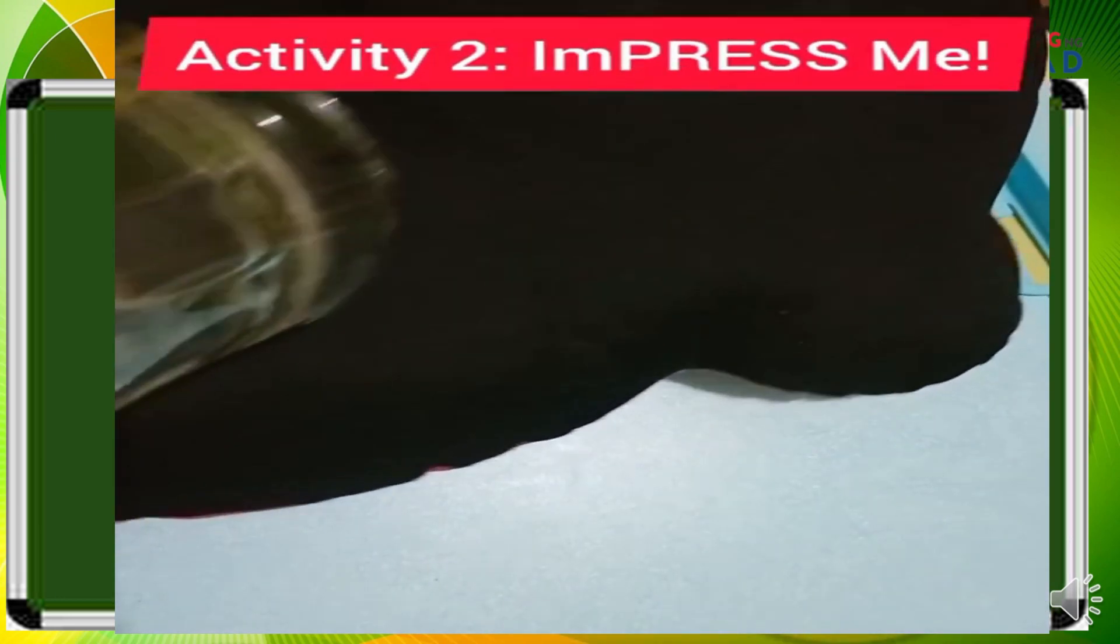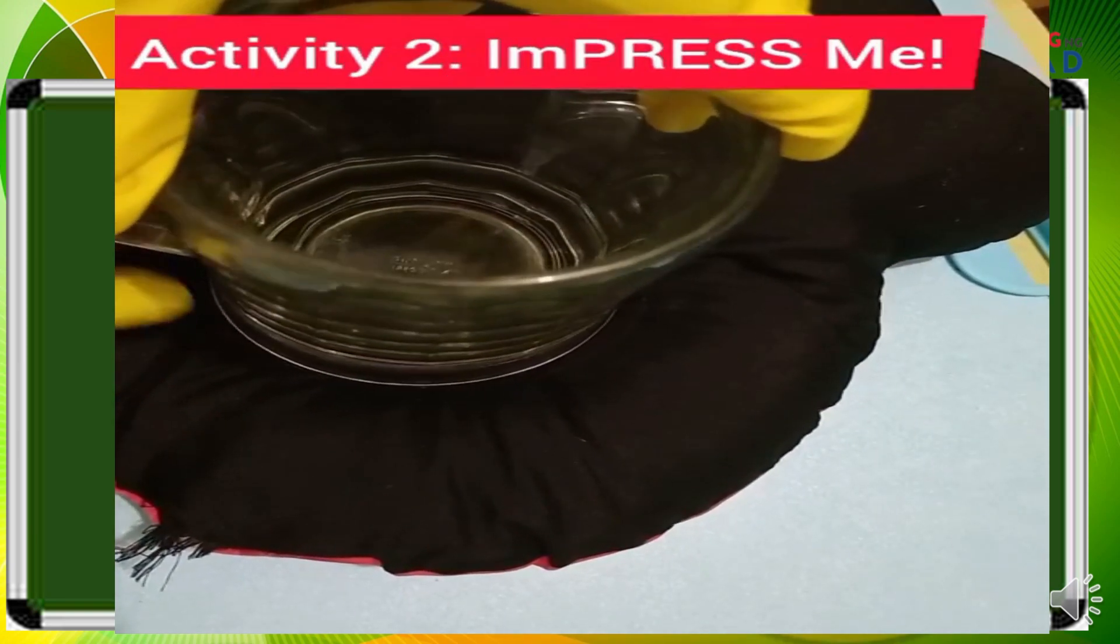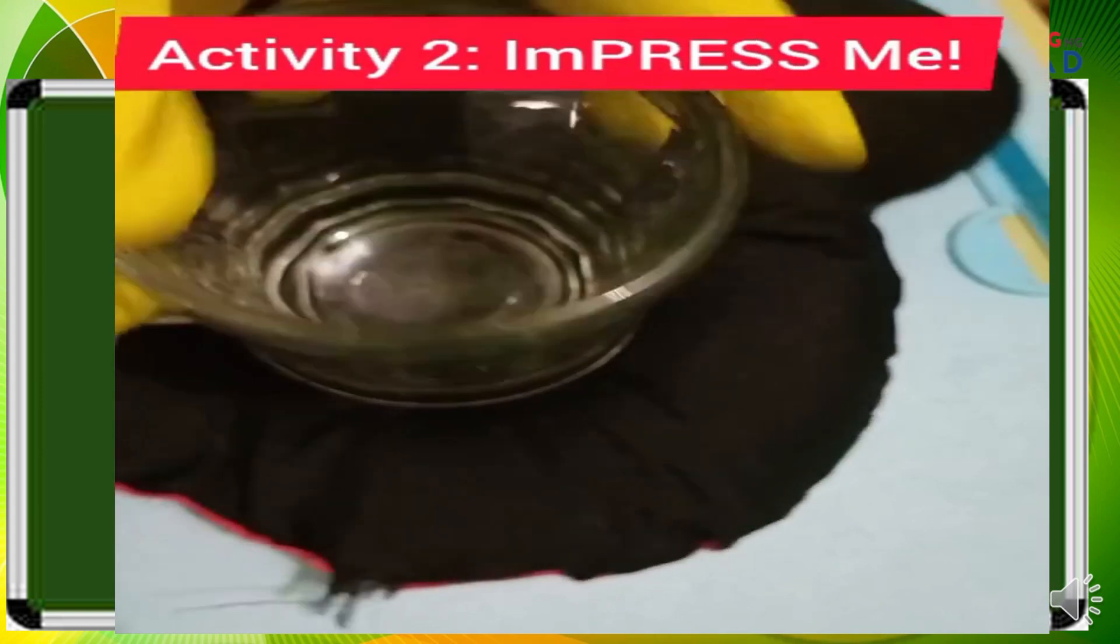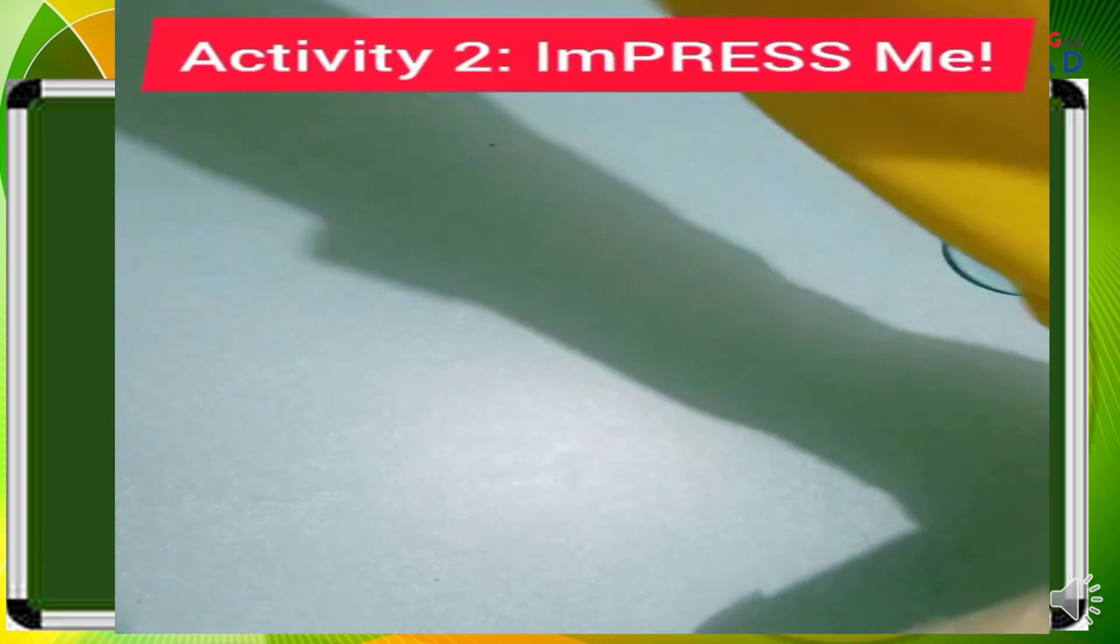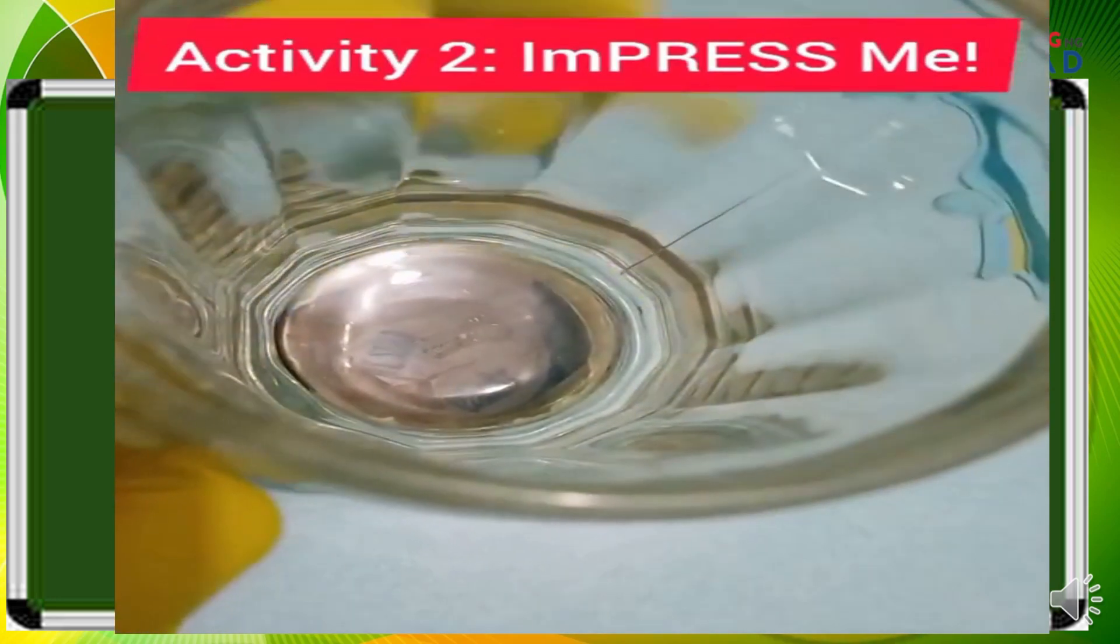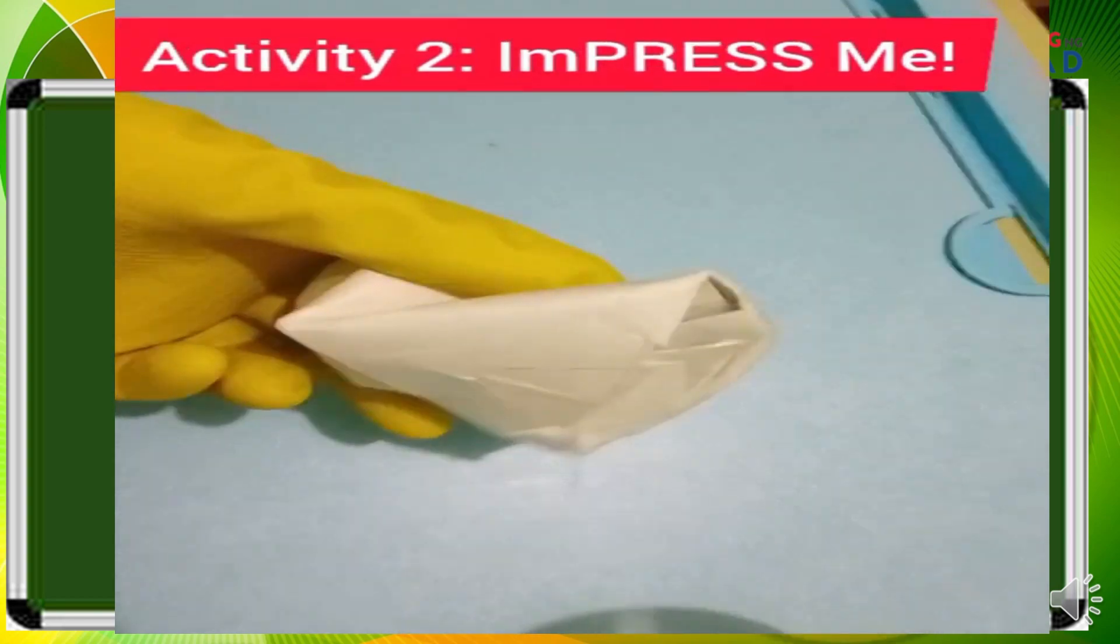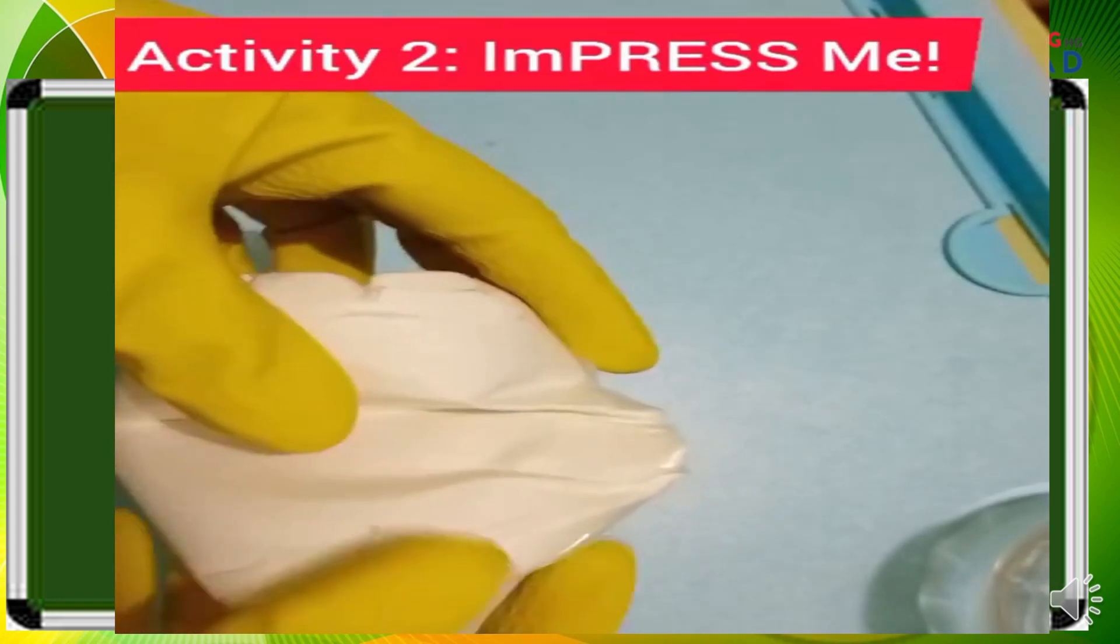First is this pillow. Observe this pillow. The place where there is pressure is thinner than the part where there is no pressure. Next is this paper cup. Let's apply pressure to this paper cup. After applying pressure, the texture, the size, and shape change.